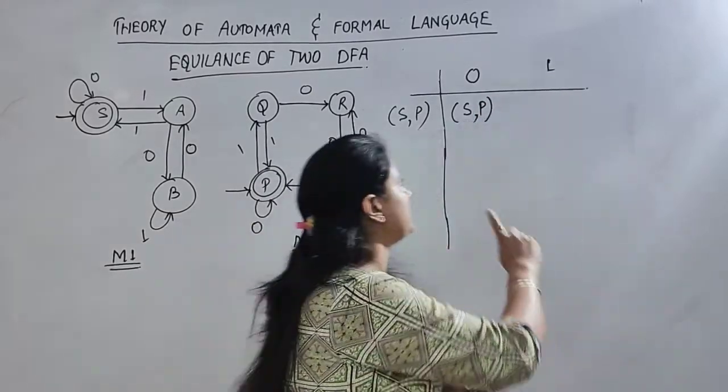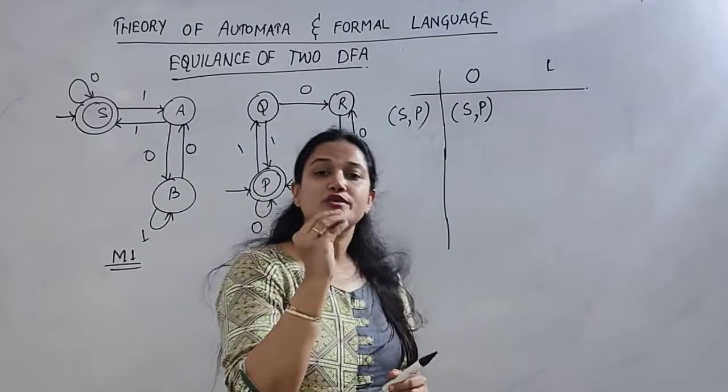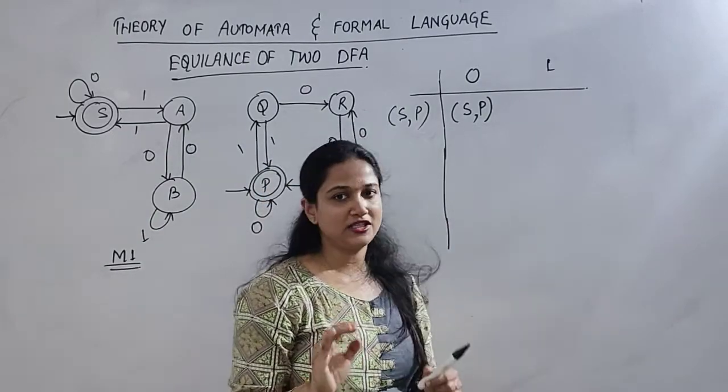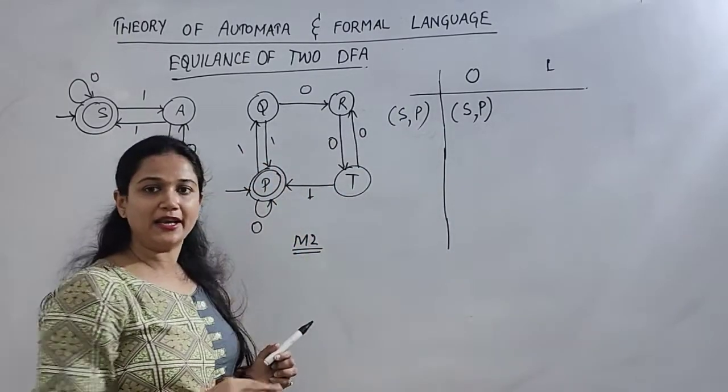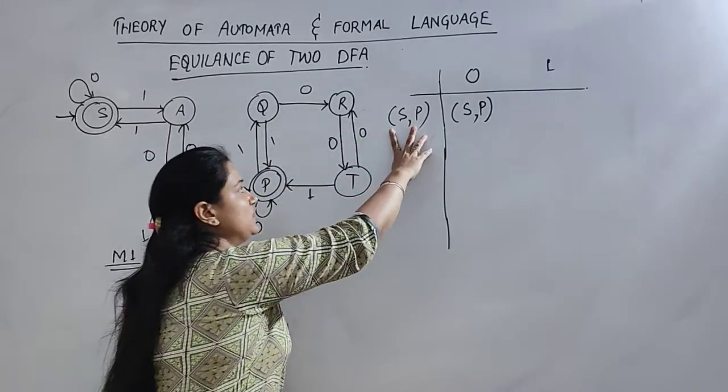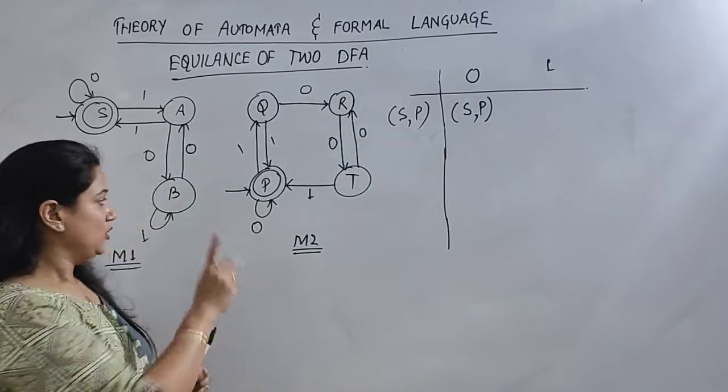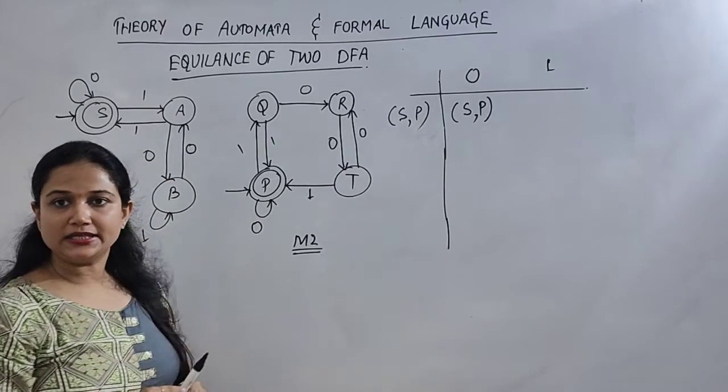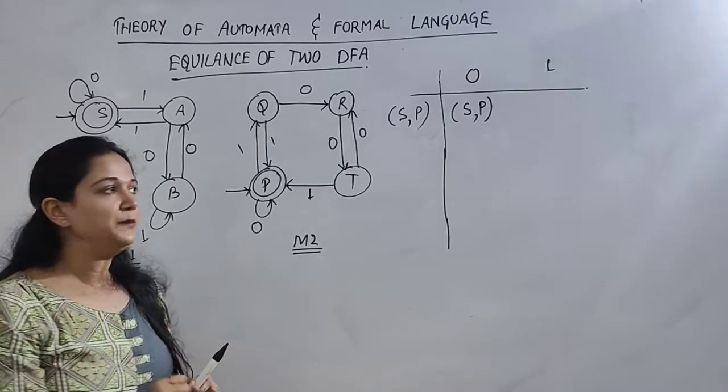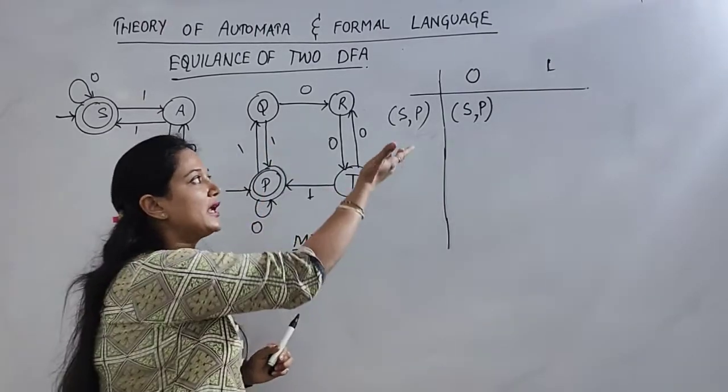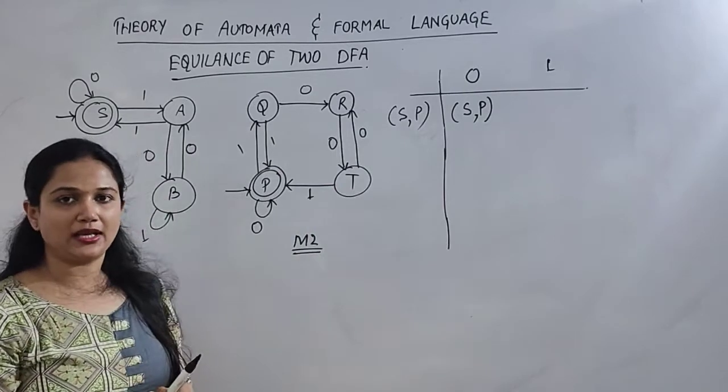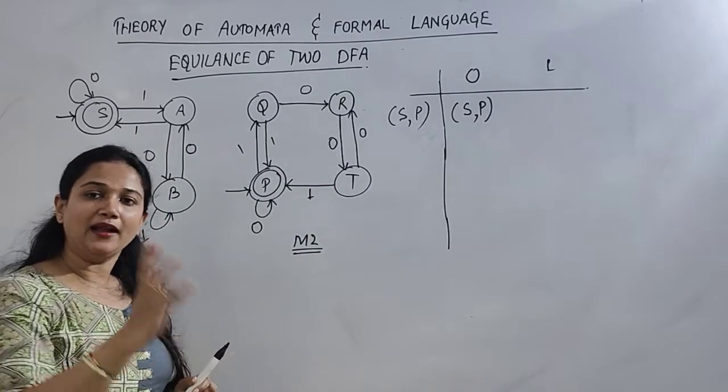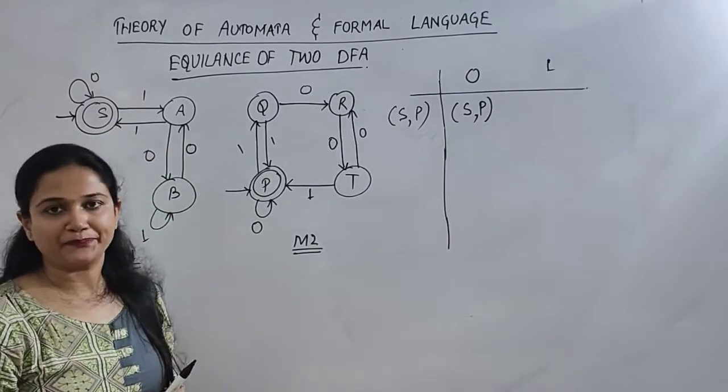Now, what do we do? The entry we make in this table, we will check the entry. This is how we do it. We start from the initial state, and then we check the input, and then we check the transition on that input. Whatever state it goes to, again they are going to map.